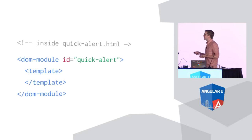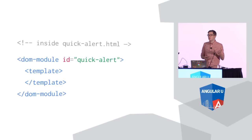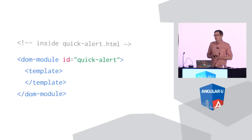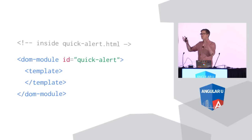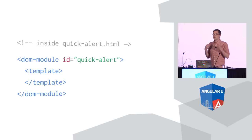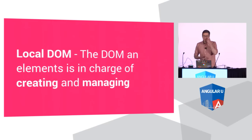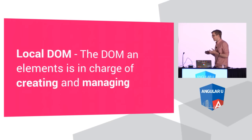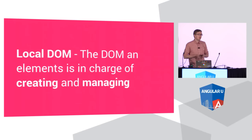But it doesn't really do that much — it's basically a span, a generic container. So if I want to give it a little bit of UI and look and feel, I'm going to add a DOM module to my HTML file. DOM module, if you're familiar with previous versions of Polymer, is basically the place where you put all the templating for your element. Inside the DOM module, I give it a template tag and an ID that matches my tag name. Polymer is going to use that ID plus your element name to link these two up.